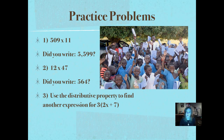Number 3: use the distributive property to find another expression for 3 times the quantity 2x plus 7. That's how you would read that: 3 times 2x plus 7. We've got two different ways of writing multiplication inside that one expression. Go ahead and see how you do — pause it and push play when you're ready. You're just writing another expression; you don't know what x means yet, and then we'll show you how to do that.